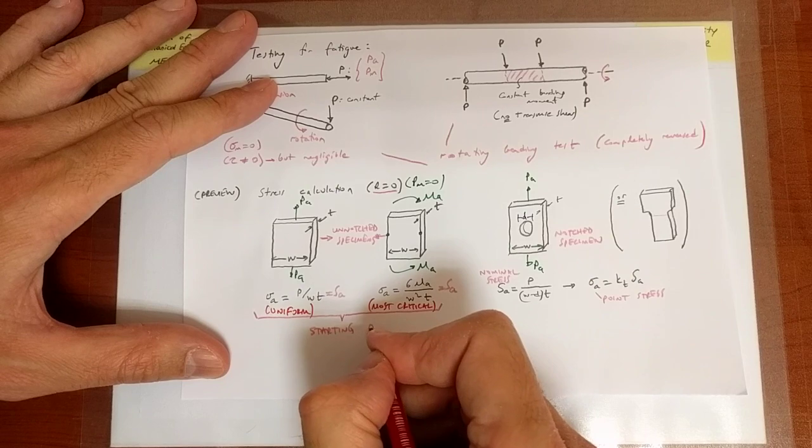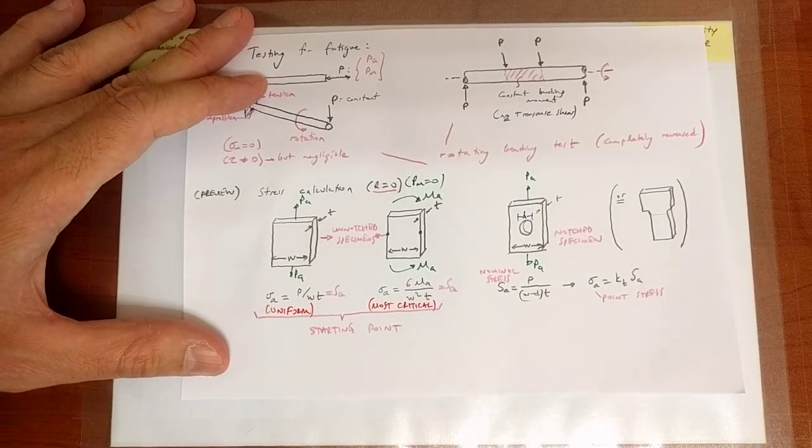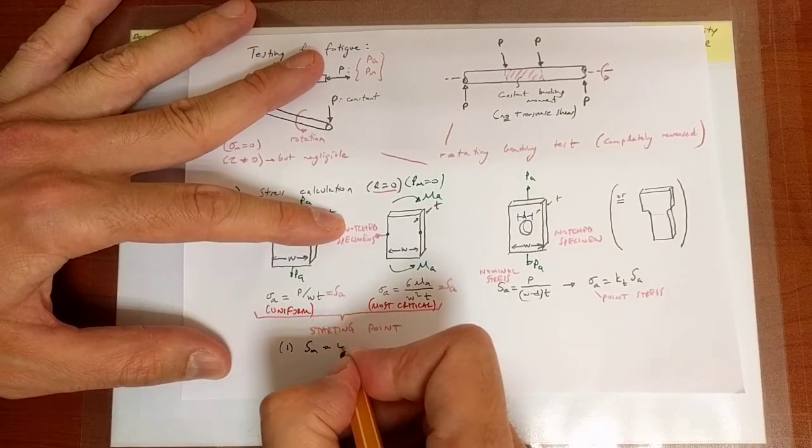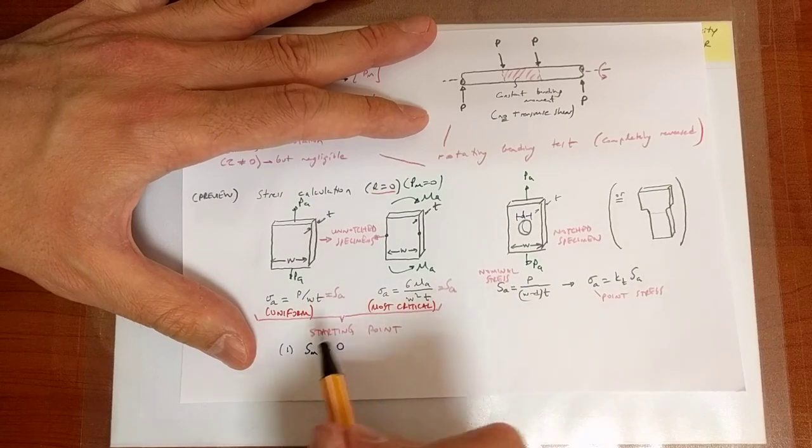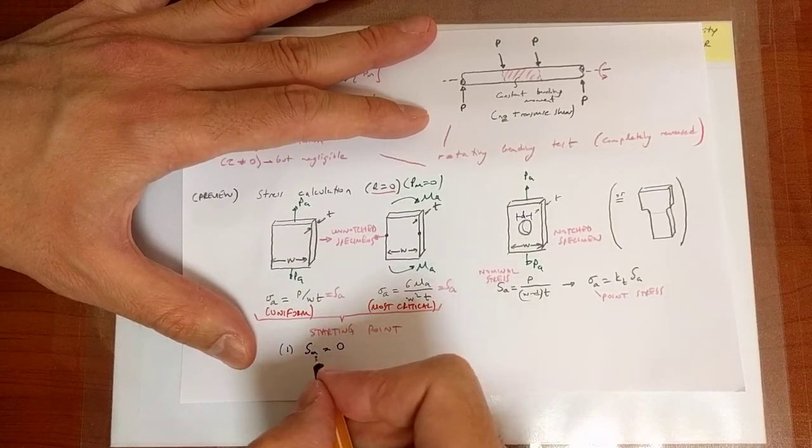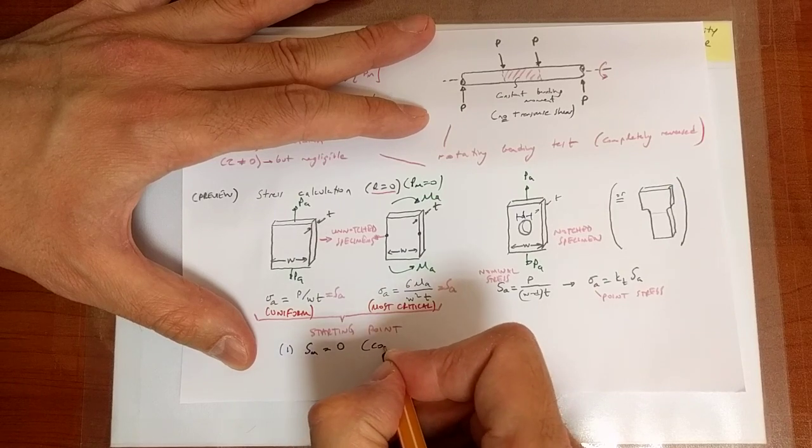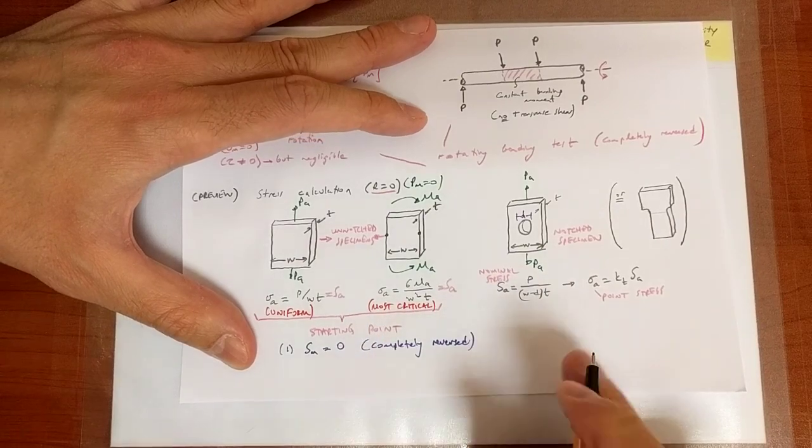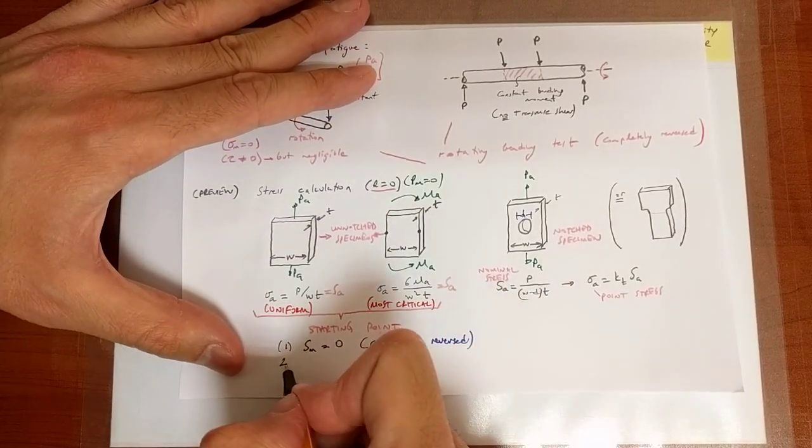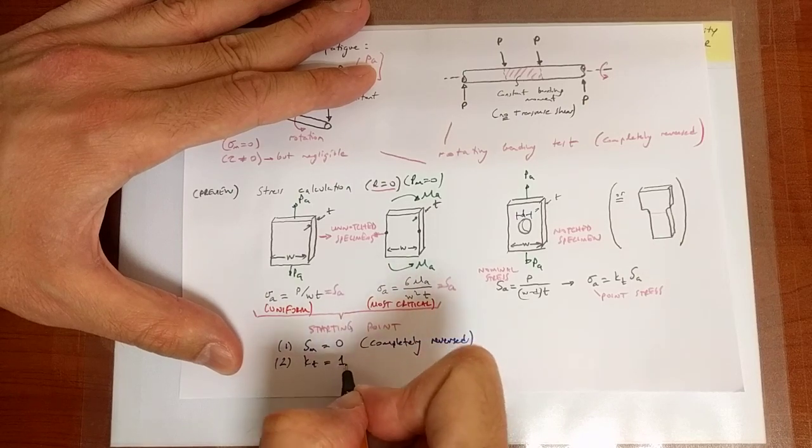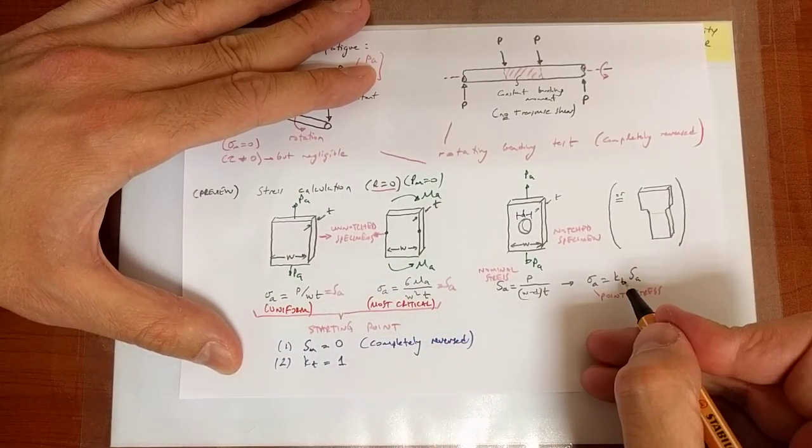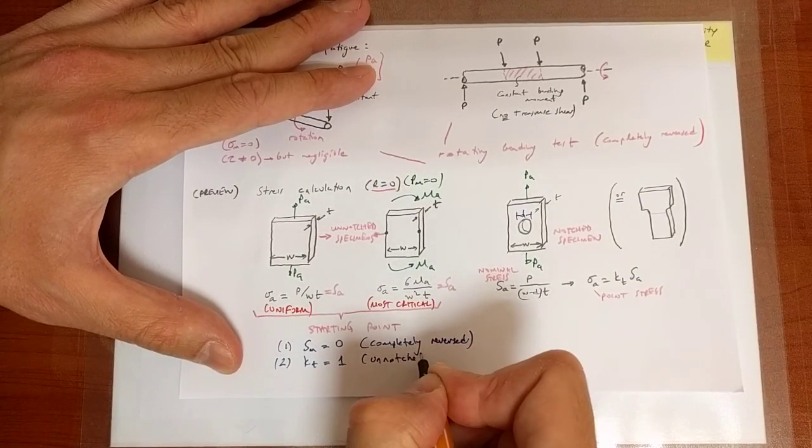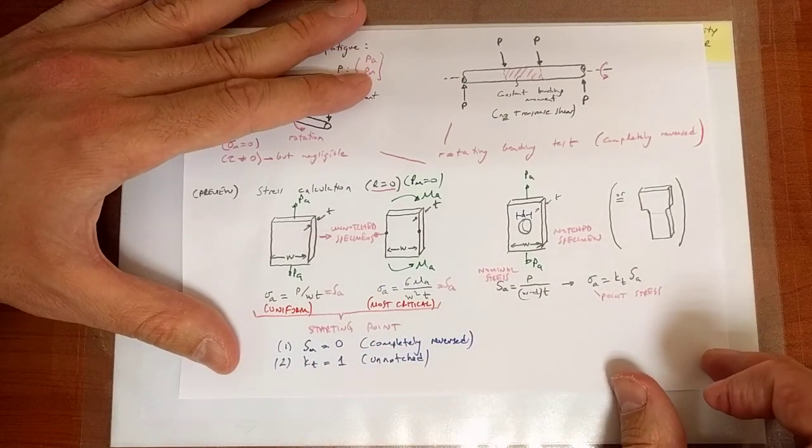So, in other words, in our starting point, we have the following major features. One, we don't have mean stress. So, I'm just going to go ahead and write SM because we don't have notches. I could just as well write sigma M. It's the same thing. The mean is equal to zero, which means we're looking at completely reverse loading. That's point number one. Point number two. Well, there is no stress concentration. So, if you like, the stress concentration factor KT is equal to one, which means we're looking at unnotched specimens. There is no stress concentration.